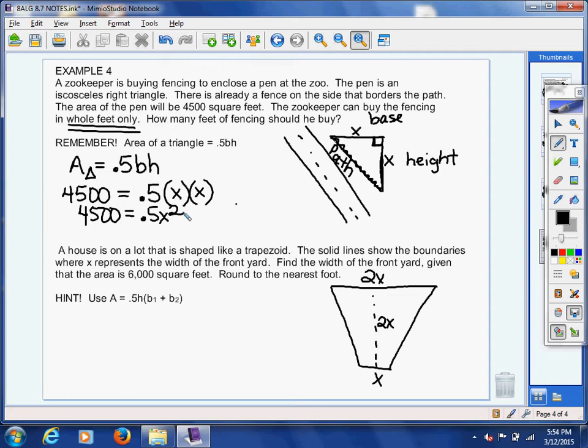We have our square variable on one side and our constant number on the other, almost, when you need to move the 0.5 over to the other side. Beautiful. So now you should have x squared equals 9,000.